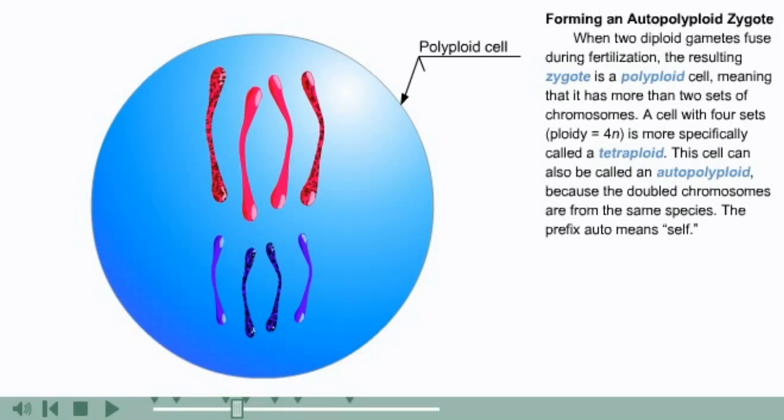A cell with four sets, or a ploidy equaling 4n, is more specifically called a tetraploid. This cell can also be called an autopolyploid because the doubled chromosomes are from the same species. The prefix auto means self.